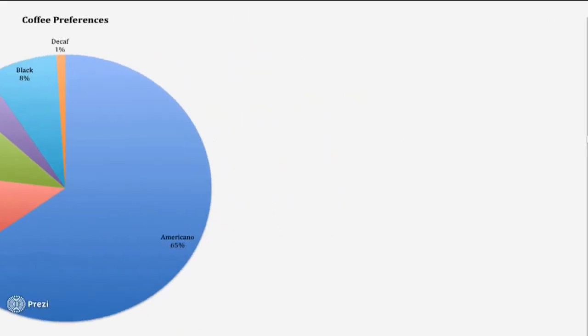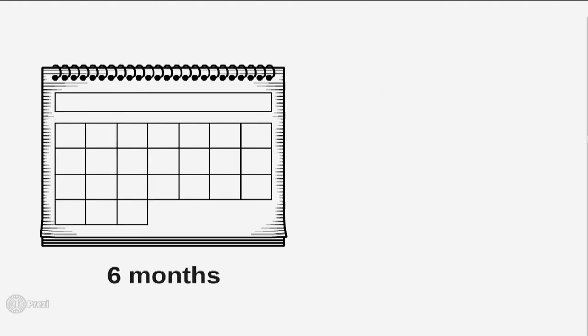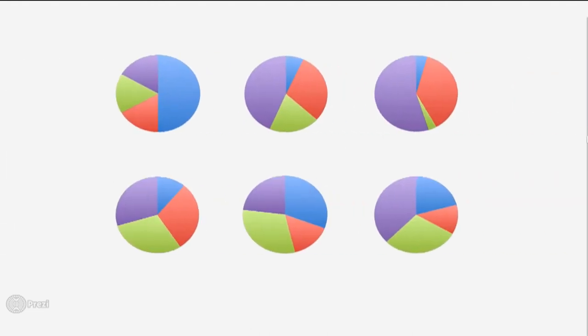Let's imagine you would now like to know whether people's coffee preferences change over time, let's say over a period of six months. Although pie charts are easily understood, multiple pie charts will be needed to show any changes in the data over time. In this case, six pie charts will be needed for six months. Therefore, it will be much easier to use a line graph instead.